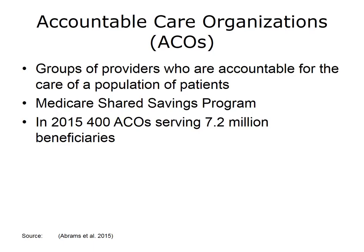Accountable care organizations are groups of providers — doctors, hospitals, and others — who agree to take responsibility for the quality and cost of care for a defined population of patients. The ACA established the Medicare Shared Savings Program to encourage development of Medicare ACOs. If an ACO met certain quality benchmarks and kept spending within a targeted amount, that ACO would receive 50% of those savings. In 2015, there were 400 ACOs serving about 14% of the Medicare population, or 7.2 million beneficiaries.